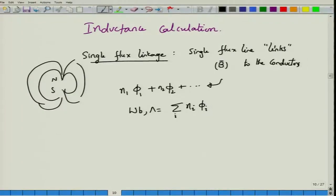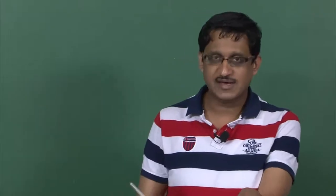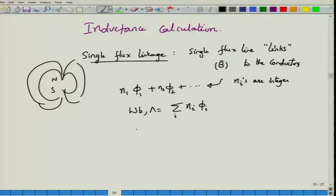The assumption that the Nᵢ values are integers need not hold. A flux might link only partially to a circuit — this concept of partial flux linkage is very important and will come up when calculating the inductance of a coaxial cable. Therefore, one must generalize and allow for fractional flux linkages; Nᵢ values can be numbers like 8.3253, not just whole numbers.